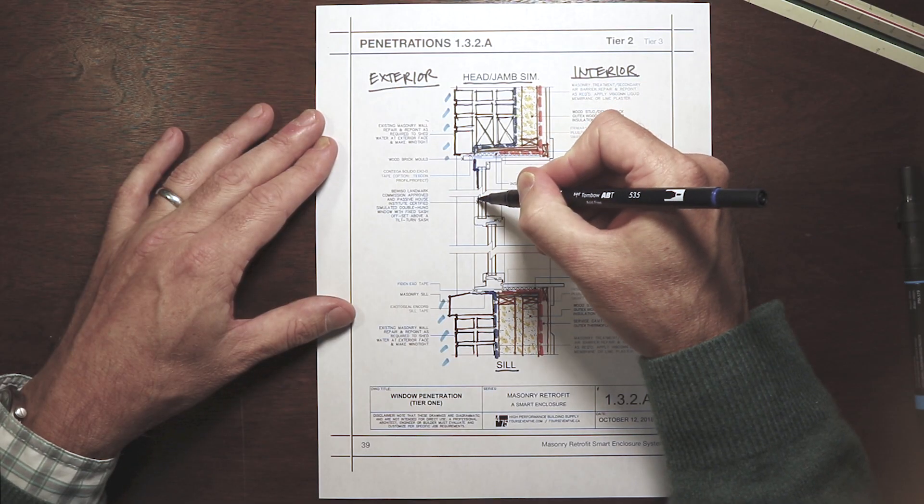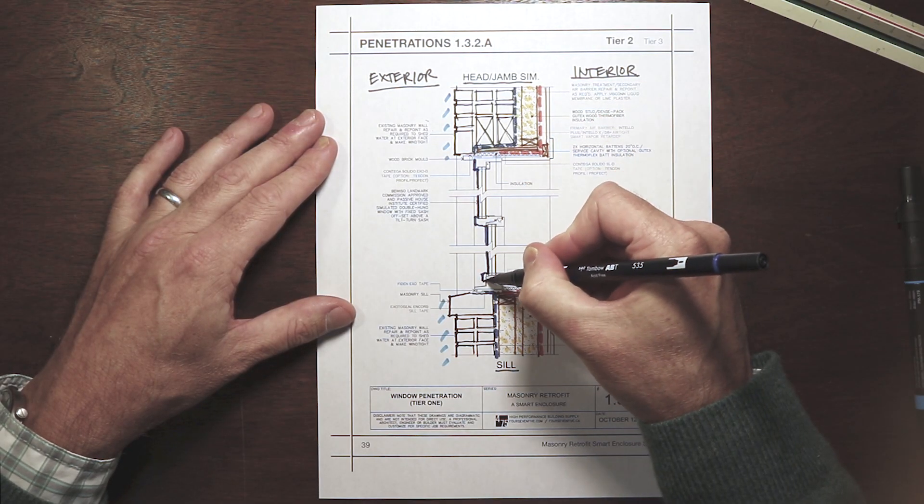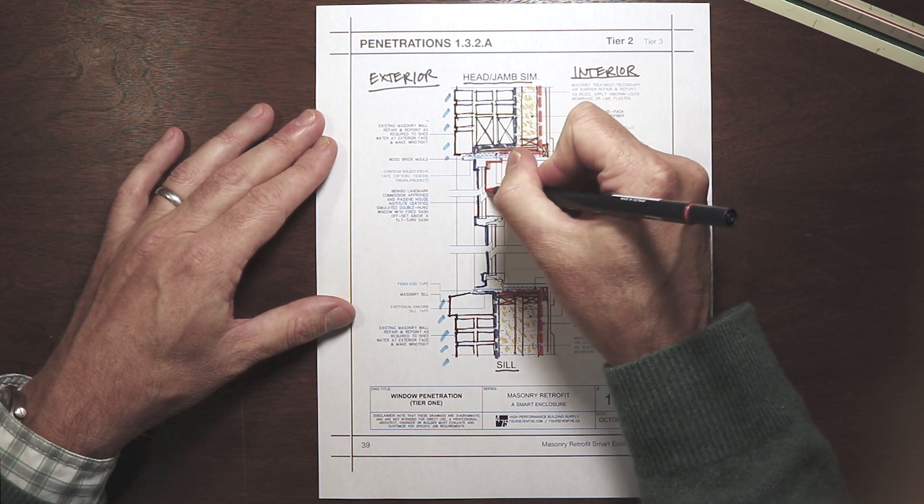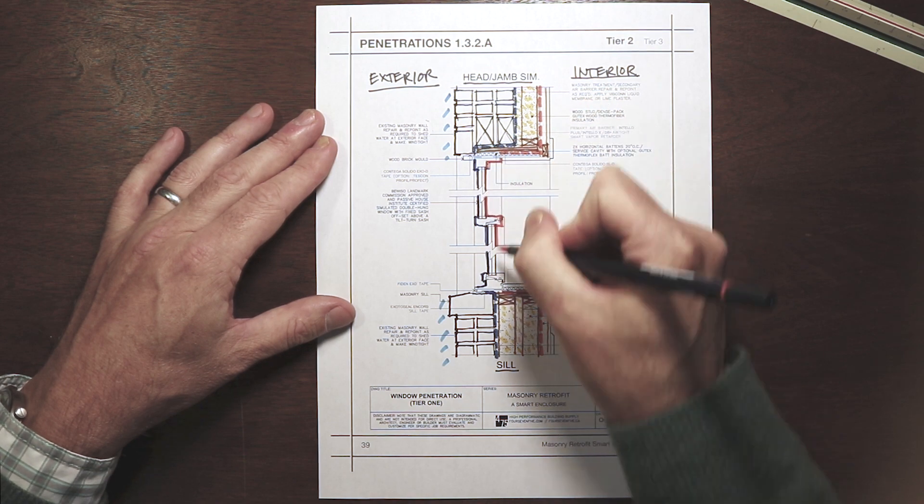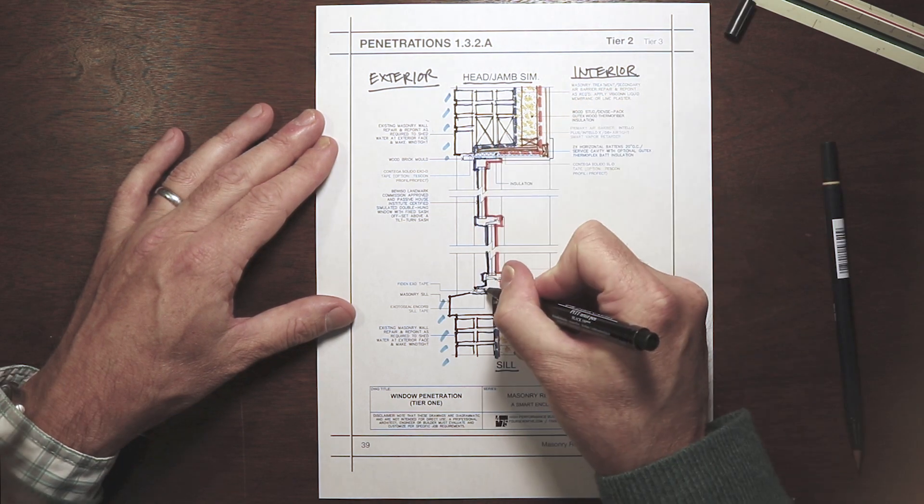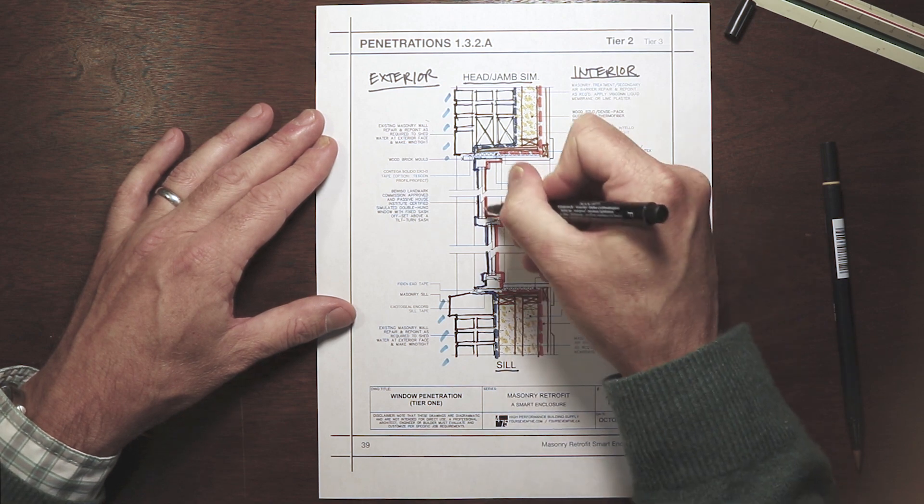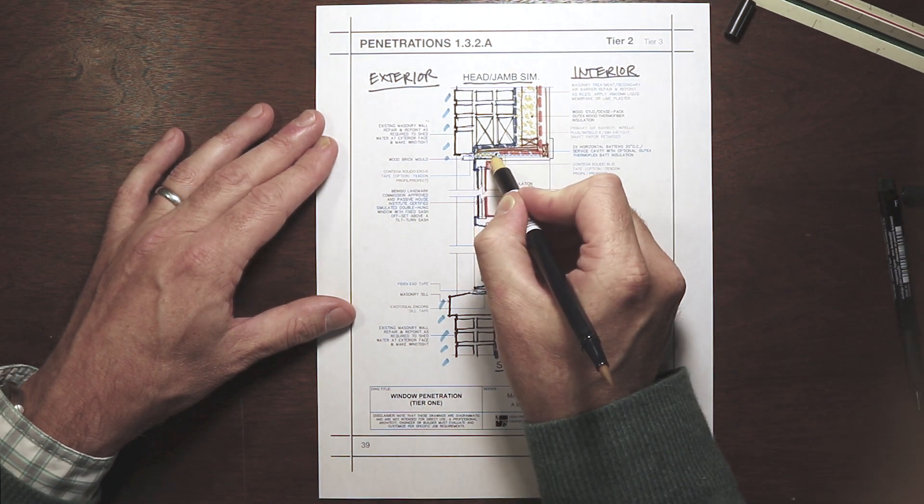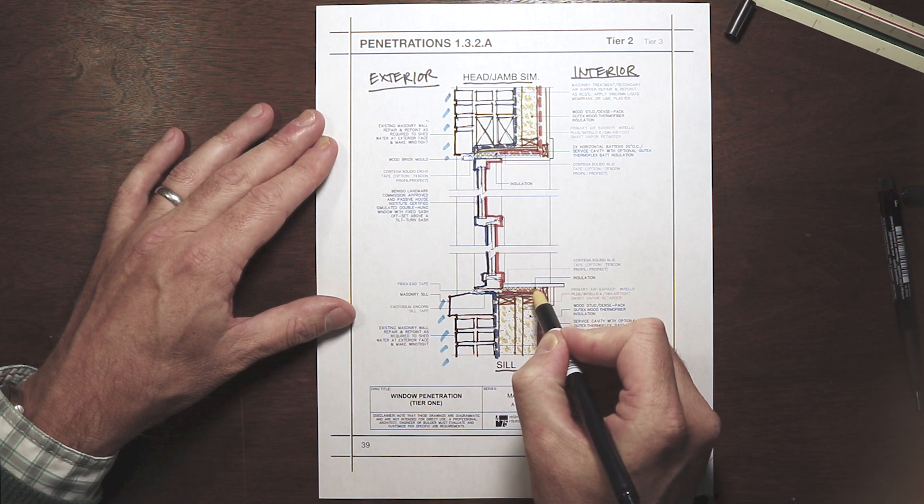So what's going to make or break the system effectiveness are the connections between the windows and the surrounding control layers. Without absolute continuity of control layers, the performance of the window is compromised, and the resulting building performance becomes uncertain.